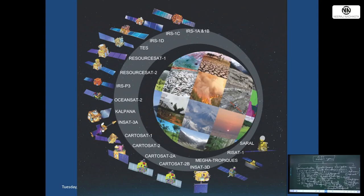The list of remote sensing satellites of India includes IRS 1A, 1B, 1C, 1D, ResourceSat 1, 2, 2A, IRS P3, OceanSat 2, OceanSat 3, Kalpana (India's first meteorological satellite, named after Kalpana Chawla), INSAT 3A, Cartosat 1, 2, 2A, 2B, 3, INSAT 3D, INSAT 3DR (meteorological satellites), MEGATROPICS (India-France joint, 2011), RISAT 1, 2, and recently RISAT 2B R1 for radar imaging, defense-based services, and border area surveillance.